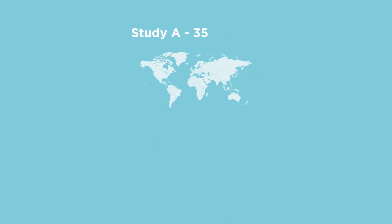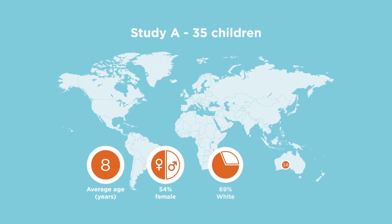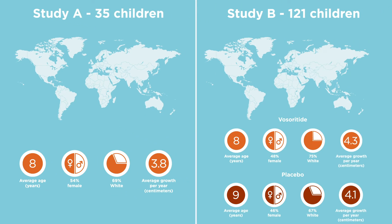The two studies included a total of 156 children aged 15 to 18 years with achondroplasia, from Australia, Germany, France, Japan, Spain, Turkey, the UK and USA.